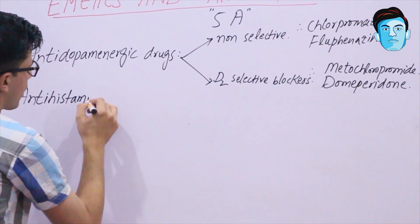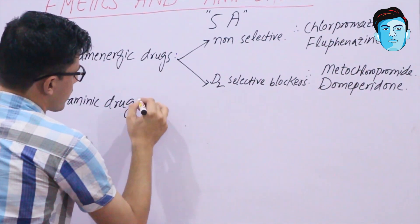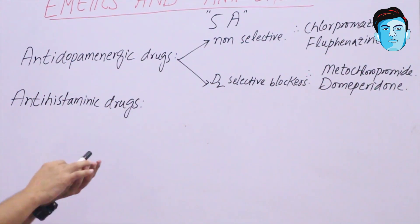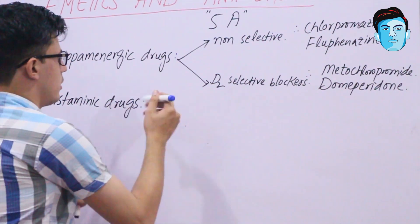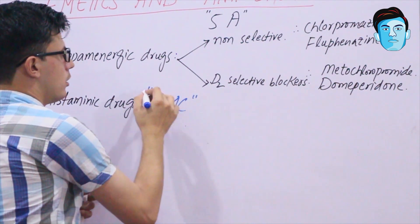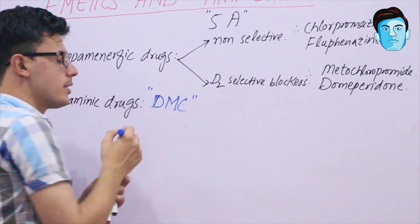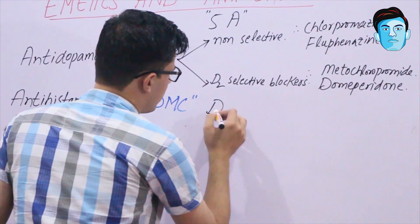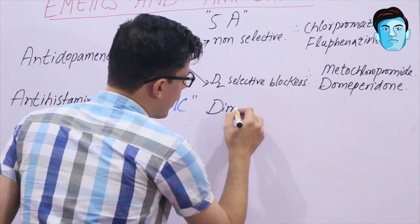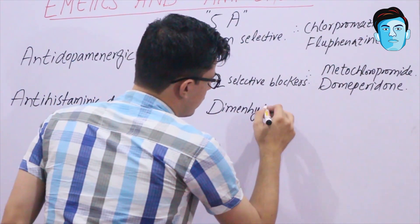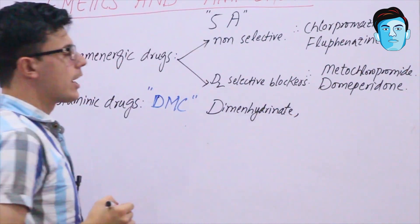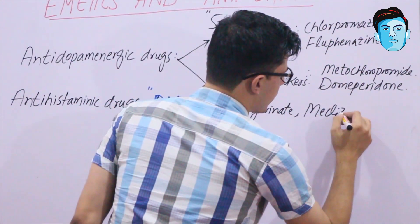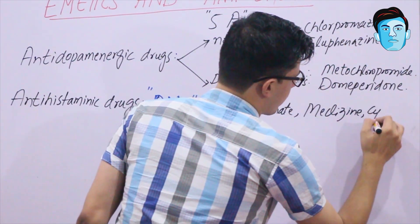The second A stands for antihistaminic drugs. A helpful trick to remember them is the mnemonic DMC: D stands for dimenhydrinate, M stands for meclizine, and C stands for cyclizine.